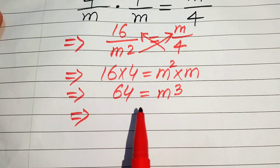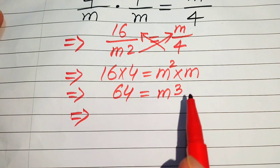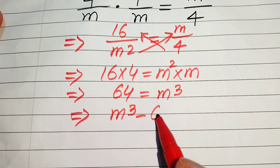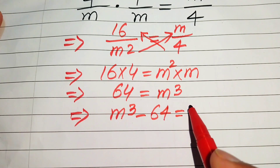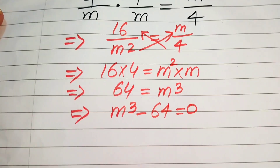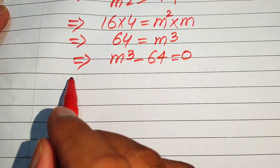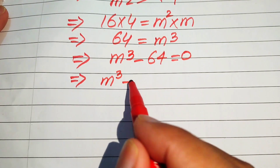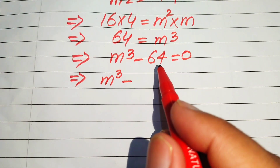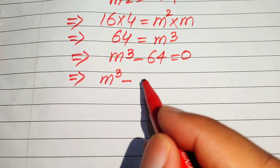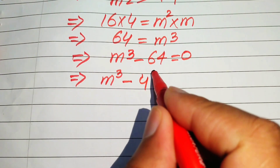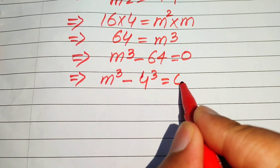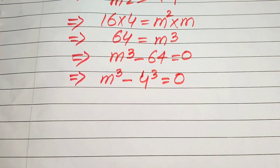Here we rearrange the values and move 64 to the right-hand side, so it will be written as m cubed minus 64 equals 0. We note that 64 is the cube of 4, so this becomes m cubed minus 4 cubed equals 0.